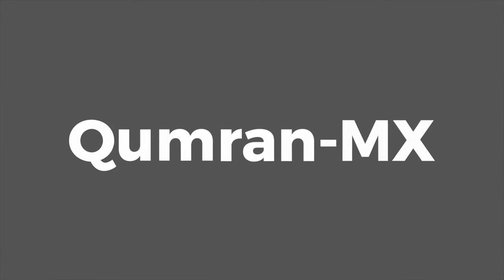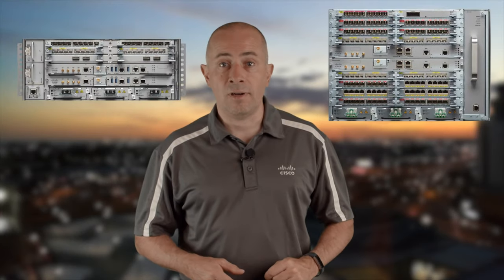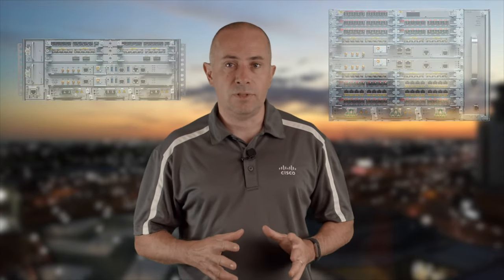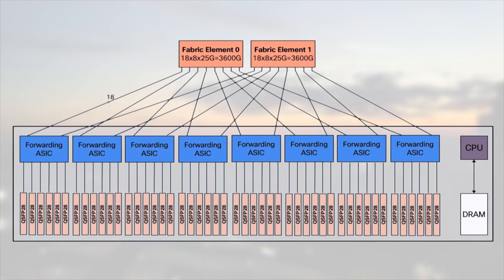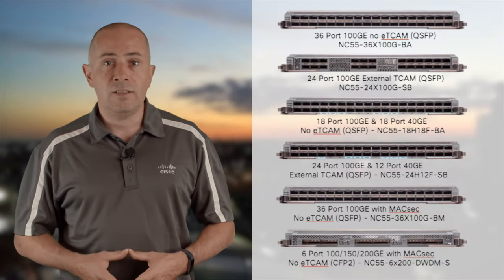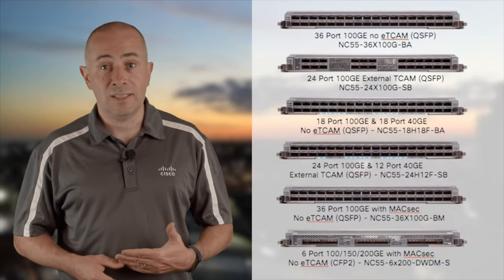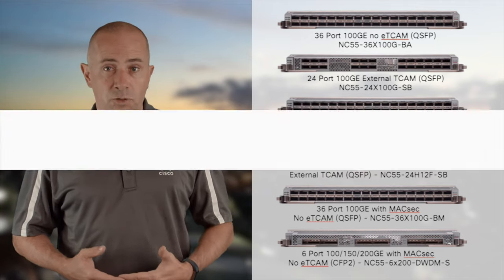In our portfolio, Qumram MX is used only in the NCS5501 — also in access products like the NCS560, but with differences in packet memory (GDDR5 vs DDR4) and ET-CAM type (NL12K vs Optimus Prime). We don't use Jericho ASICs in standalone mode, but many products use Jericho NPUs interconnected through fabric engine FE3600: the 5502s, and line cards such as the 36x100G non-SC, 24x100G SC, two combo cards, the MACsec card, and the coherent 6-port CFP2.